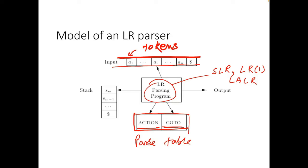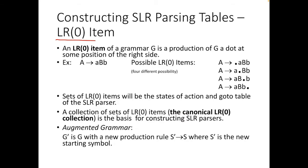For constructing SLR parsers, we use LR0 items. An LR0 item of a grammar G is a production of G with a dot at some position on the right side. If we think about a production rule of a grammar — say A to capital B small b — this is simply a production rule of grammar G. Possible LR0 items for this can have the dot at any position.